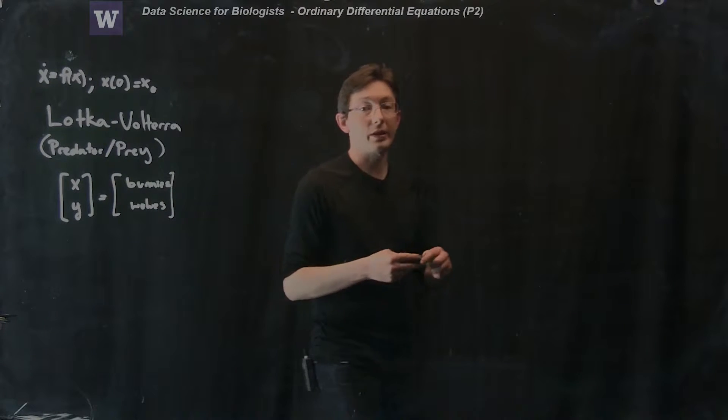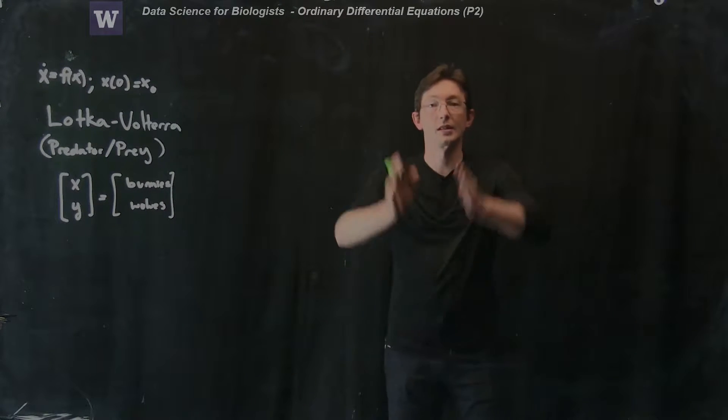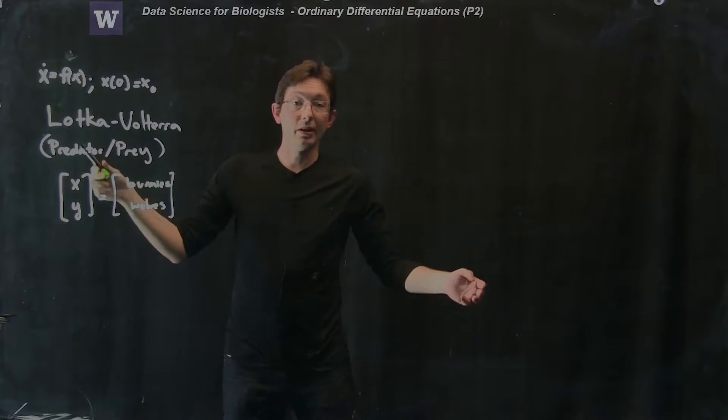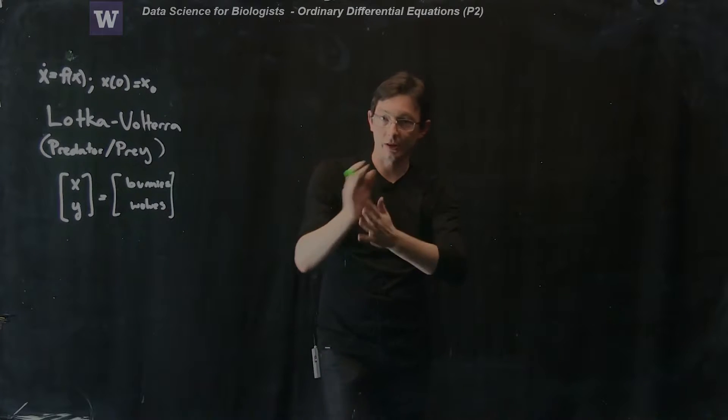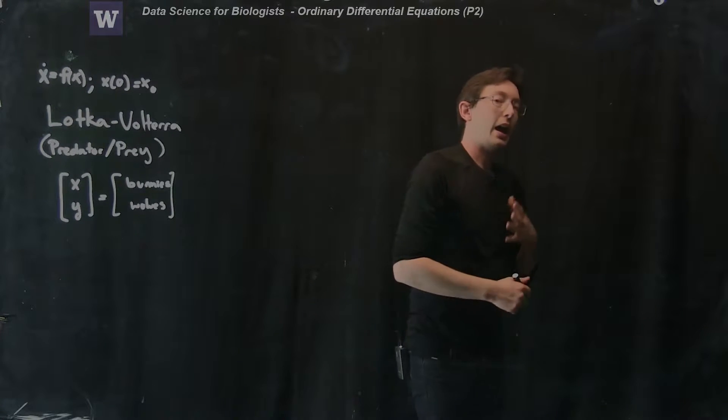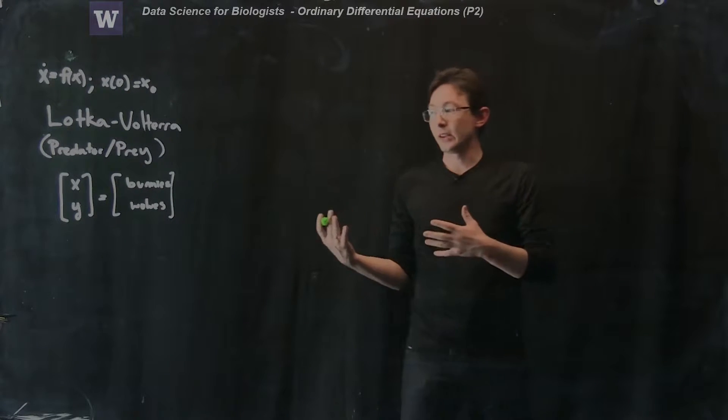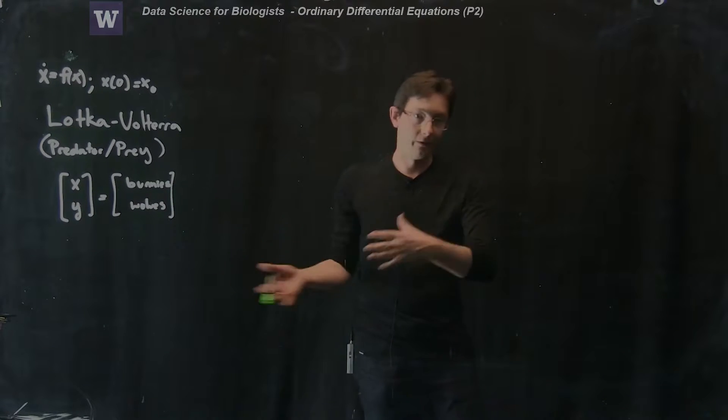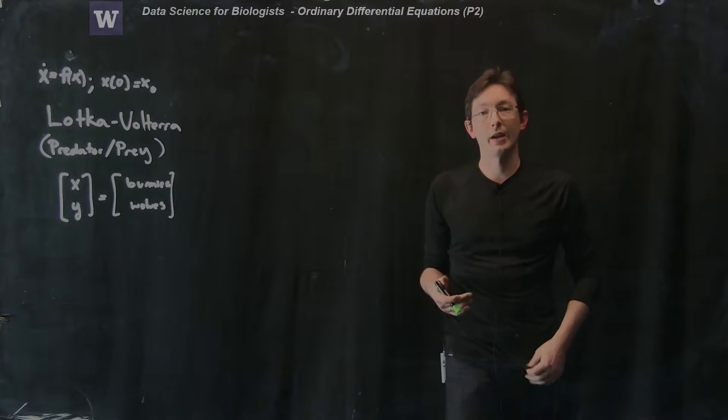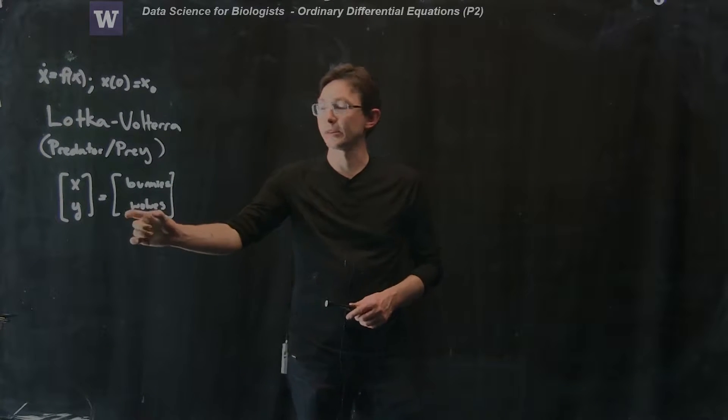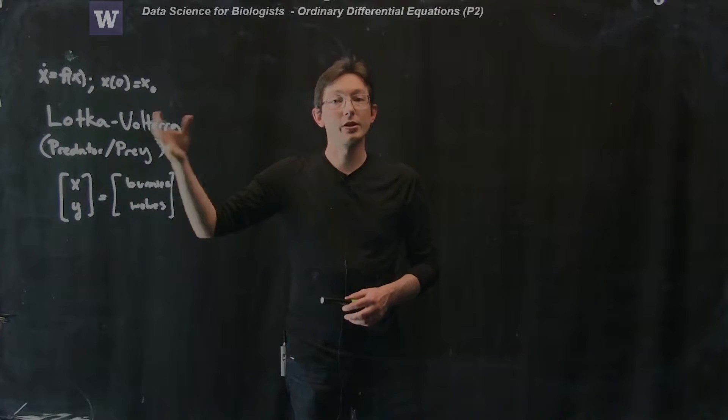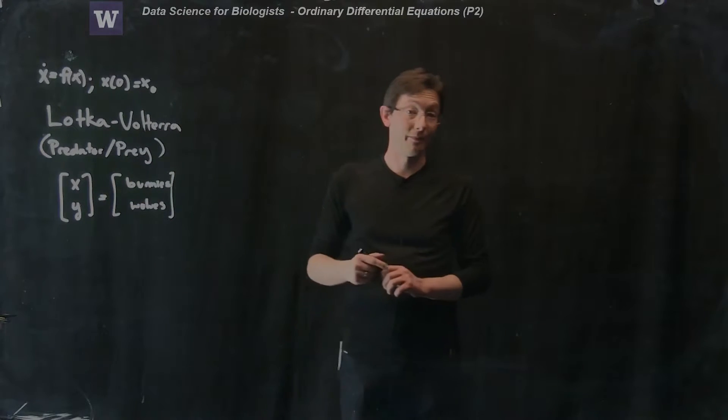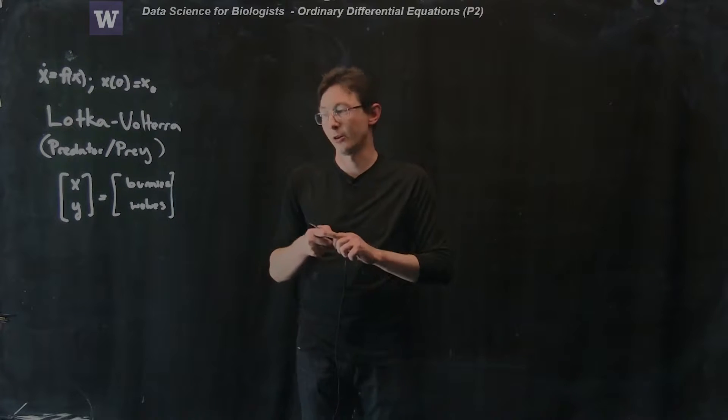We know that bunnies in the absence of wolves just explode their population exponentially. In the absence of any bunnies to eat, wolves will die and decay and eventually go to zero wolves. And if there are both wolves and bunnies, then the wolves keep the bunnies in check and the bunnies feed the wolves and there's some kind of an equilibrium that might get reached. That's the Lotka-Volterra model.